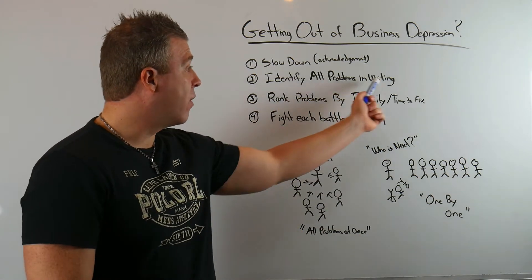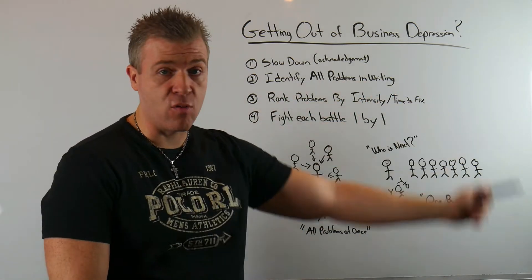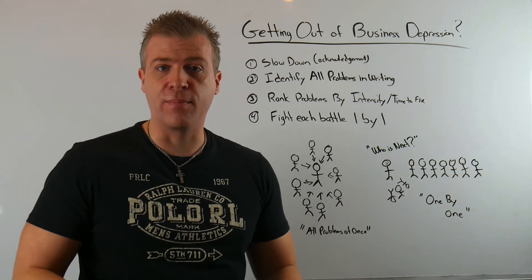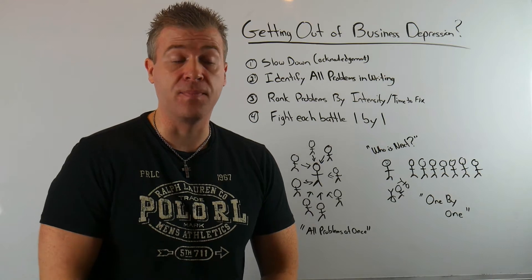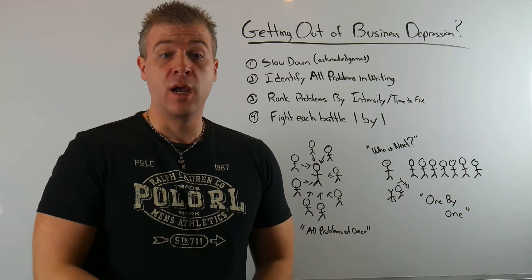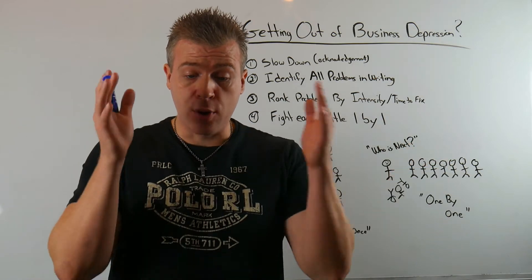Second part of this is identify all these problems in writing. In writing. If you cannot put it on a piece of paper and write solutions to that problem, you will never solve that problem or it's going to take you a lot longer to do it. If you're trying to solve a bunch of problems in your mind all at once, it's never going to happen. If you take all those problems out of your mind and put them on a piece of paper just like you're seeing right here, and then start ranking these problems.